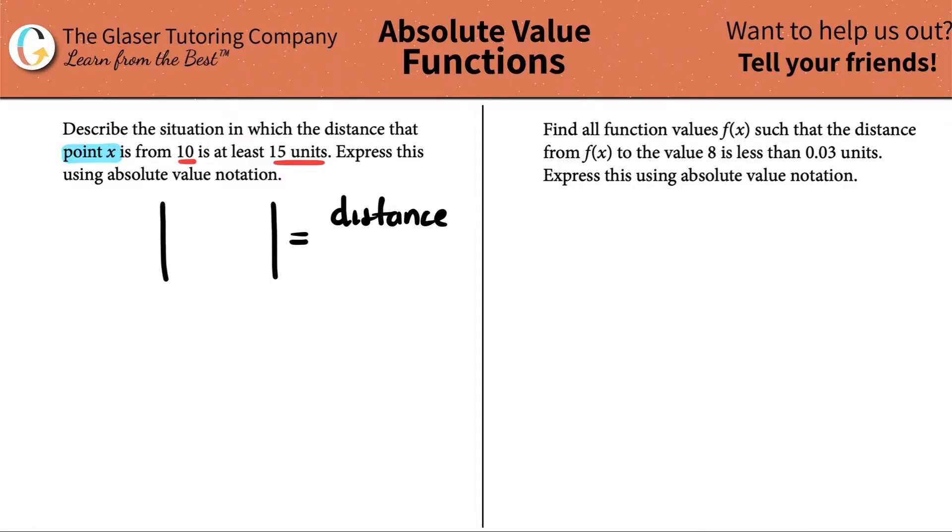You could think of it that way. And this distance, because we have the absolute value notation, whatever is in here, whether it's x plus 2, or x minus 3, or even 2x plus 1, the distance, the output will always be the positive distance.